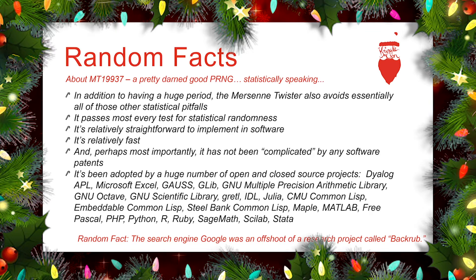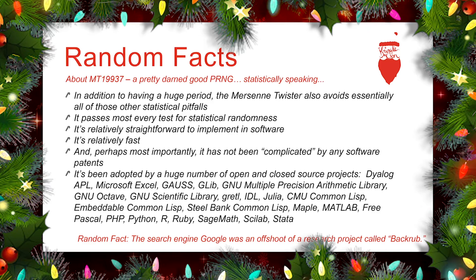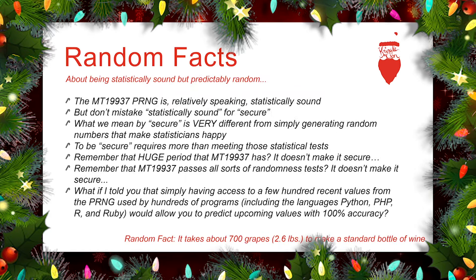Some of the ones you might be familiar with are things like the language Python. The random number generation within Python is based on the MT19937 Mersenne Twister pseudo-random number generator, as is the pseudo-random number generator in Pascal, PHP, Ruby, SageMath, Excel, and dozens and dozens of other software projects.